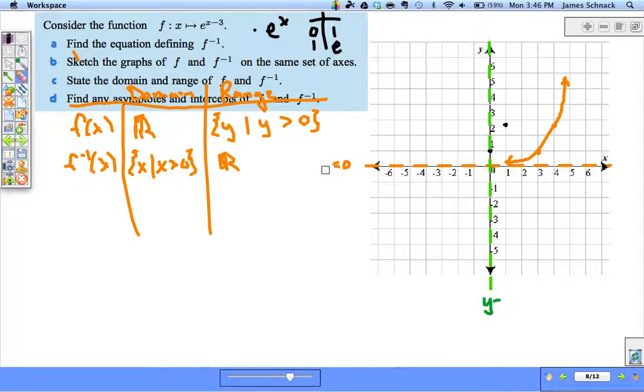And I got these equations completely backwards. Hopefully y'all caught that. Horizontal asymptote y equals zero, vertical asymptote x equals zero.